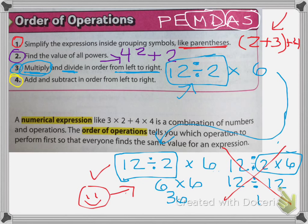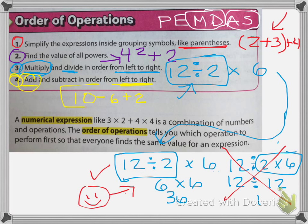Addition and subtraction have the same issue — addition does not necessarily come before subtraction. Addition and subtraction are equal to each other; you read from left to right. For example, in 10 minus 6 plus 2, even though 'add' appears first in the acronym, we do not add 6 plus 2. Instead, we do 10 minus 6 first, which gives us 4, then 4 plus 2 gives us 6. That is the correct way.